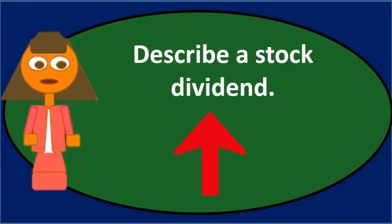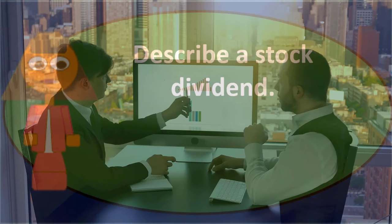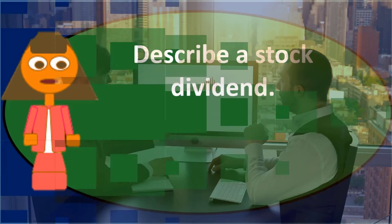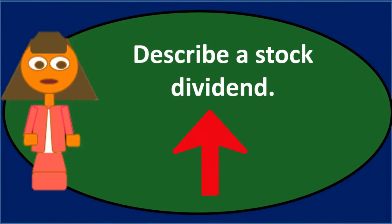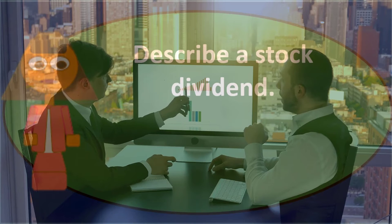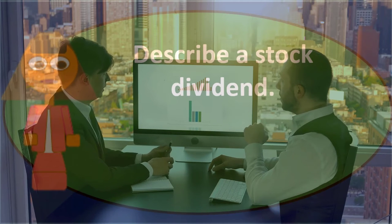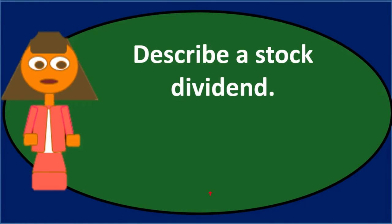In a sole proprietorship or partnership, that distribution is called a draw. In a corporation, it's called a dividend, and it's a bit different. As a partner, you have more control over how much you draw out, limited by your capital account, available cash, and the partnership agreement. You can draw a different amount than another partner. In a corporation, that's not the case — all shares need to have the same allocation of dividends.